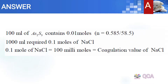In the given problem, 100 ml of arsenic sulphide contains 0.01 mol of sodium chloride. For 100 ml, the amount is 0.01 mol. Scaling up to 1000 ml gives 0.1 mol.